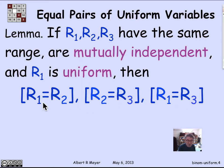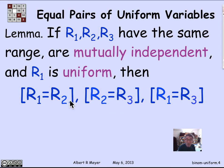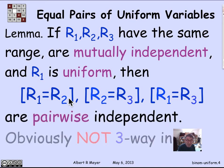Now, these events overlap — there's an R1 and an R2 appearing in multiple pairs. So even though R1, R2, R3 are mutually independent, it's not completely clear that these events are mutually independent. In fact, they're not mutually independent — they're only pairwise independent.